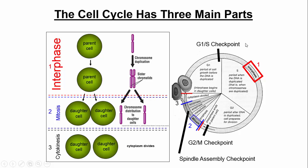Think of checkpoints like toll booths — the cell must pass them before proceeding. As the cell moves through the cycle, it encounters checkpoints such as the G1/S checkpoint, where it asks: is everything going correctly? Are the chromosomes being replicated correctly? Is the cell preparing to divide correctly? If everything's okay, the cell proceeds. If not, the cell will either fix the problem or undergo apoptosis — cell suicide. Better to have a cell die than replicate incorrectly, because incorrect replication is essentially the definition of cancer.